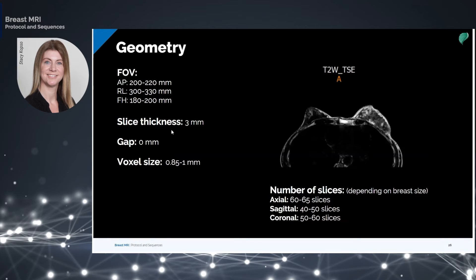Slice thickness is 3 millimeters and the gap is 0 millimeters for all the planes. This is a requirement for high-quality detailed breast MRI. If the slice thickness used was more, some small focal lesions of 5 millimeters or less would be undetectable.